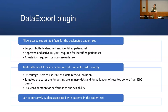The one million record limit is in place for various reasons — performance being the most important one. We also don't want to encourage users to use I2B2 to retrieve or export large amounts of data. The idea and use case for this plugin is for researchers to get some preliminary data and validate this cohort.